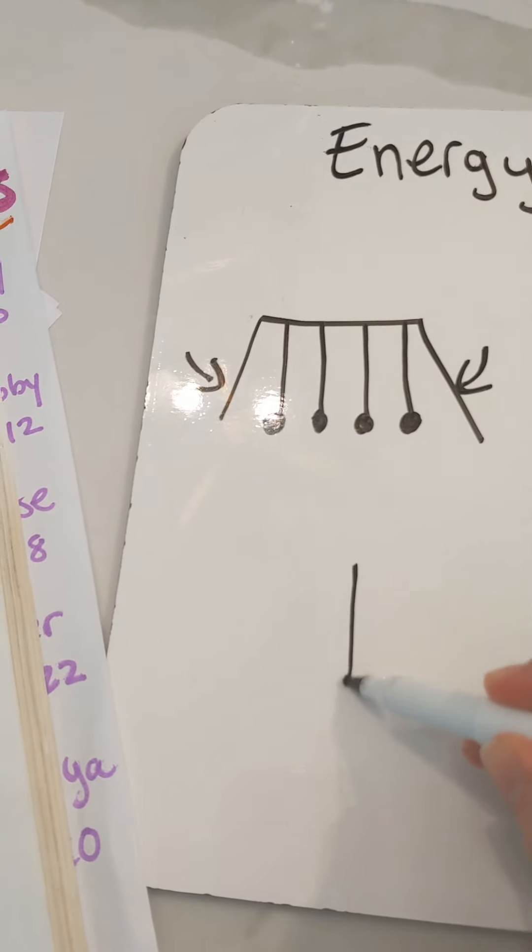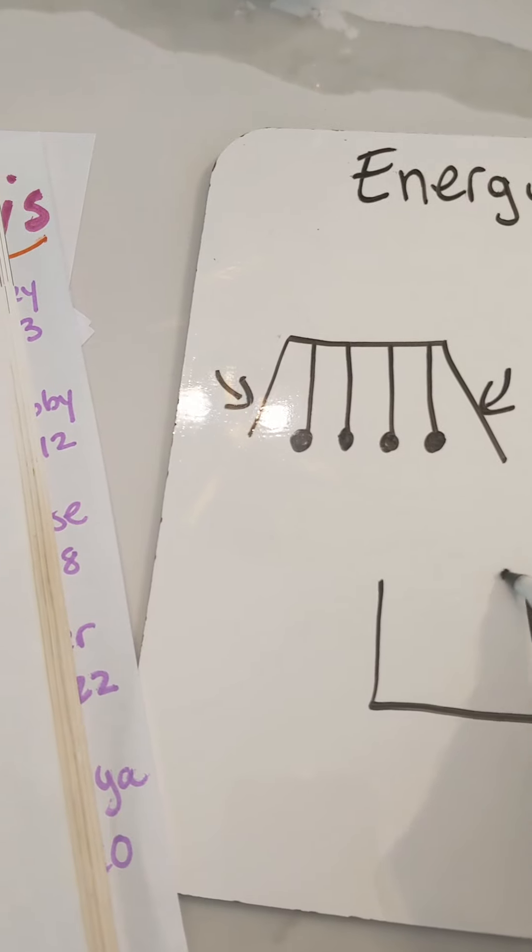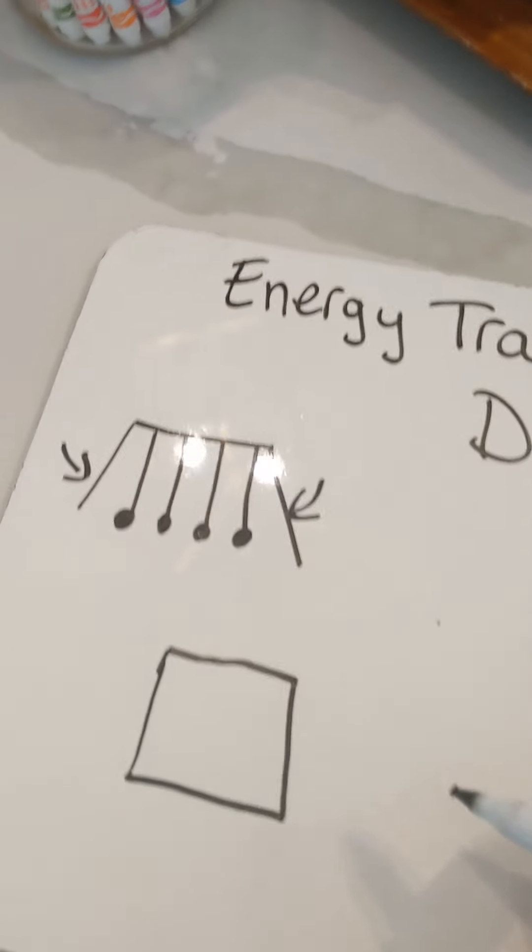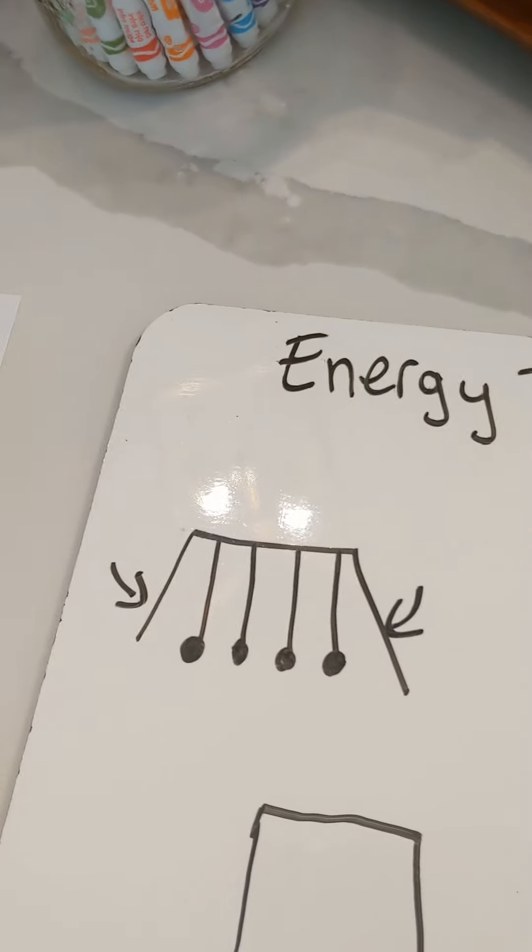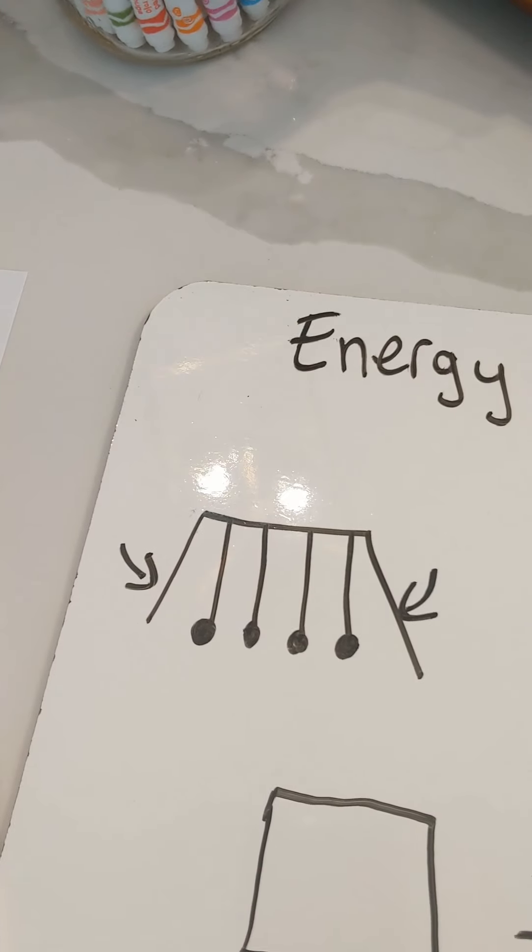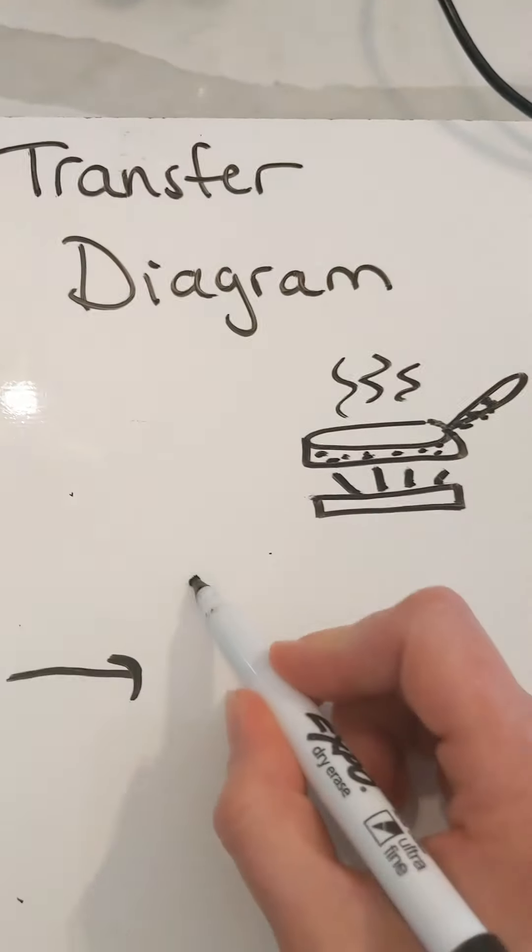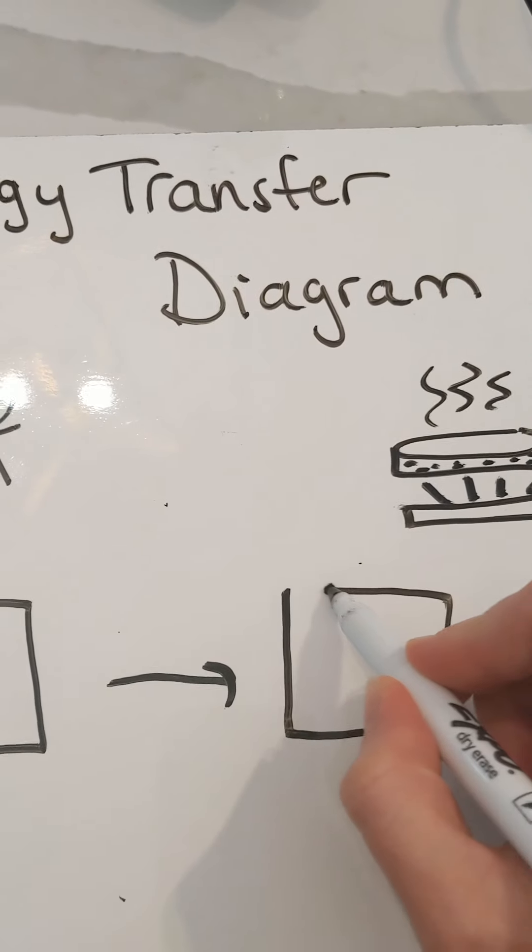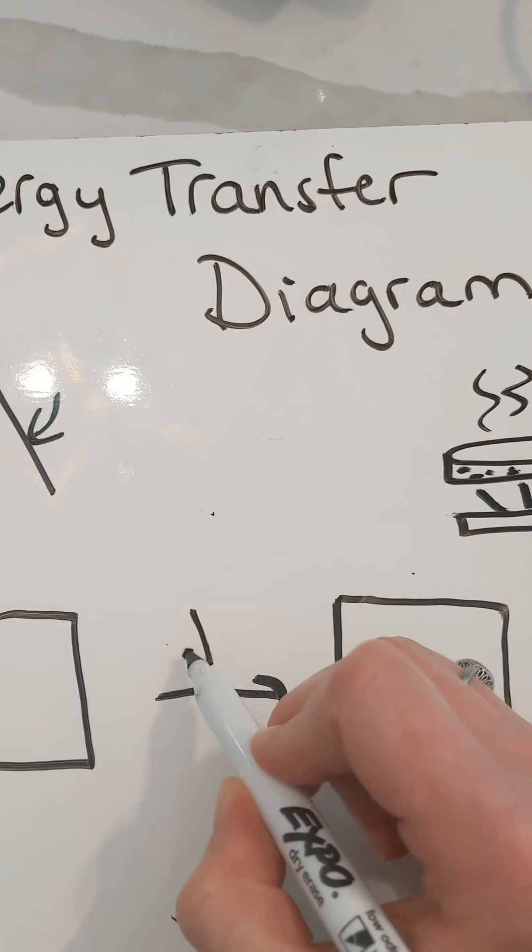So first, I kind of set mine up. We have one part of it, and you draw your arrow, and you have your other part.